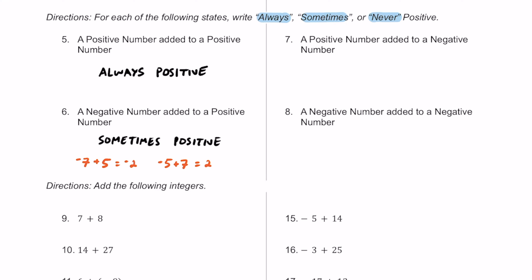For number 7, a positive number added to a negative number is also sometimes positive — just like number 6 — and it depends on the absolute value of each number. For example, 10 plus negative 2 is still positive 8 because 10 is farther from 0, but positive 2 plus negative 10 equals negative 8 because negative 10 has a greater absolute value.